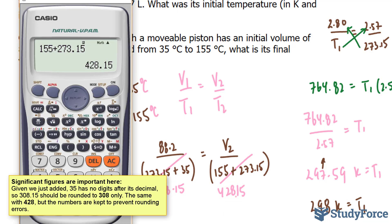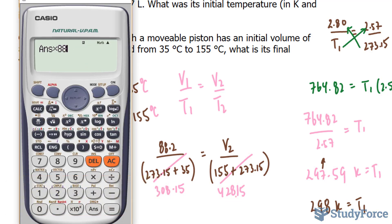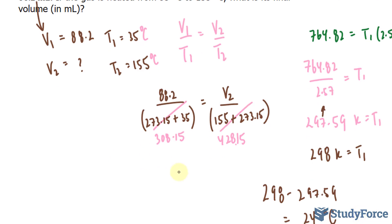Now, to cross multiply, I'll take this number and multiply it to 88.2. And I'll take this number and multiply it by V2, then subsequently divide both sides by that number. So, technically, I'm taking this and dividing by 308.15. This gives us 122.54.